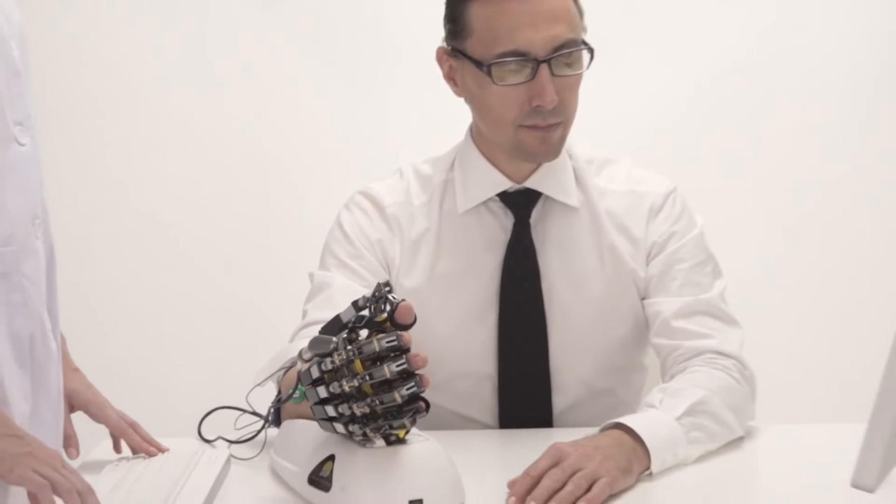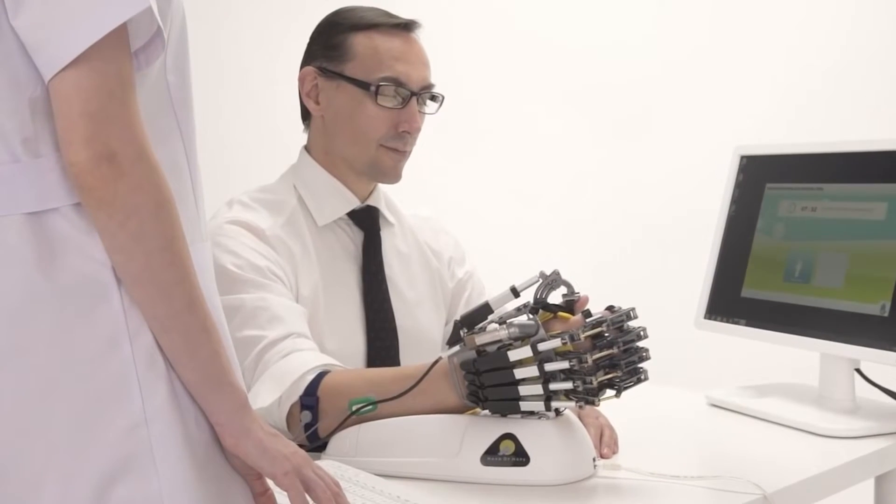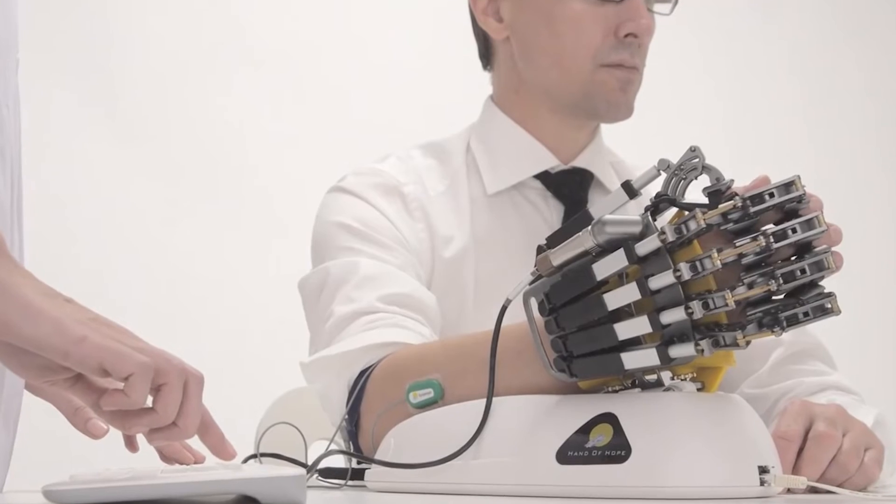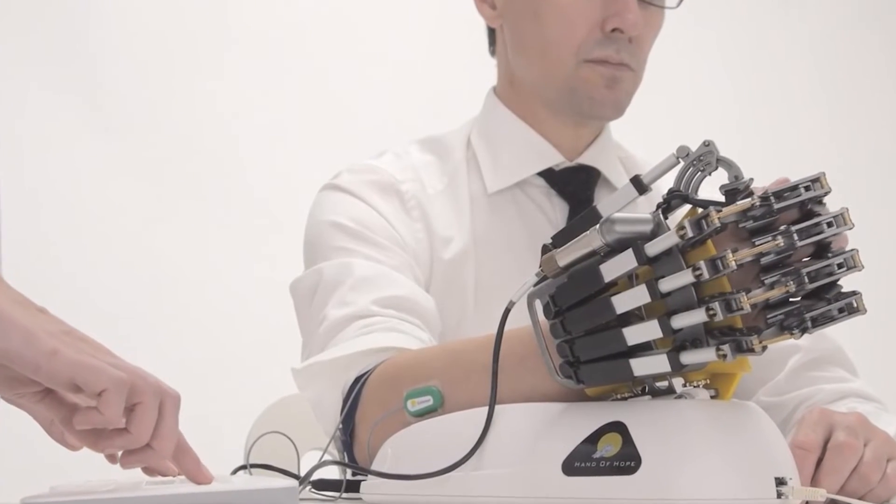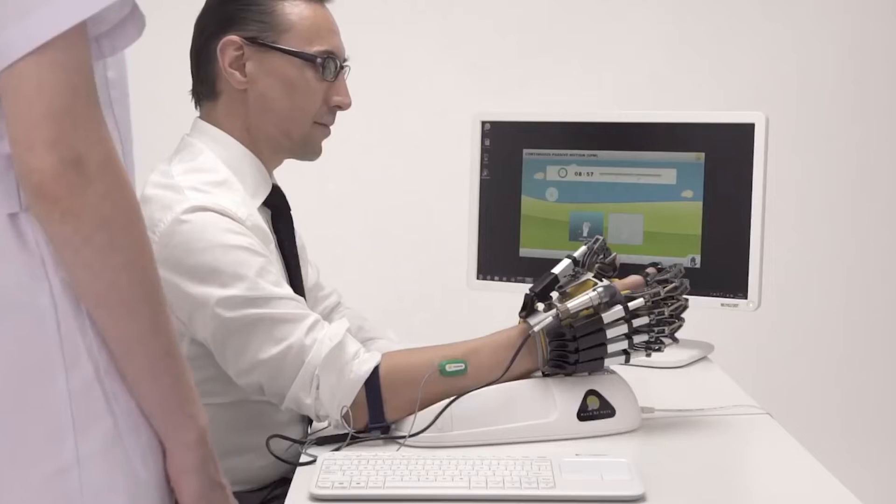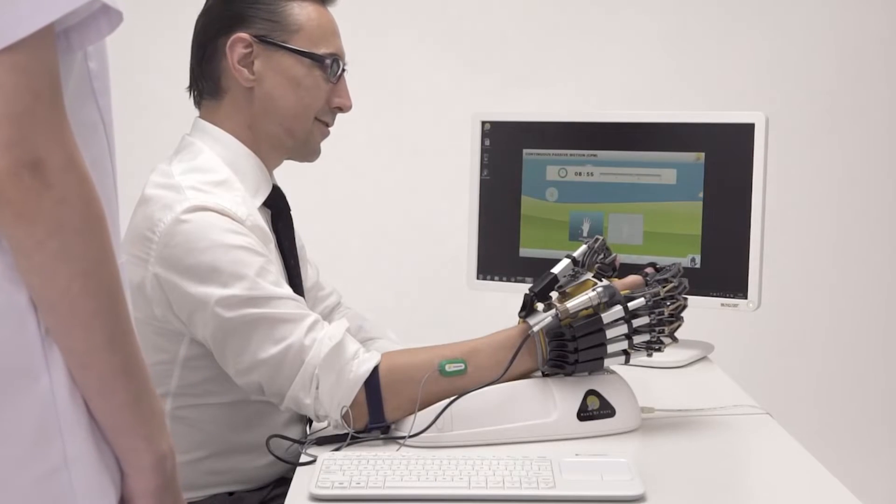Voluntary EMG signals are commanded by the brain and detected by sensors. As an active and assistive device, it processes these signals and delivers them to the hand brace. In that way, the robotic arm understands that the patient wants to open or grasp the hand.